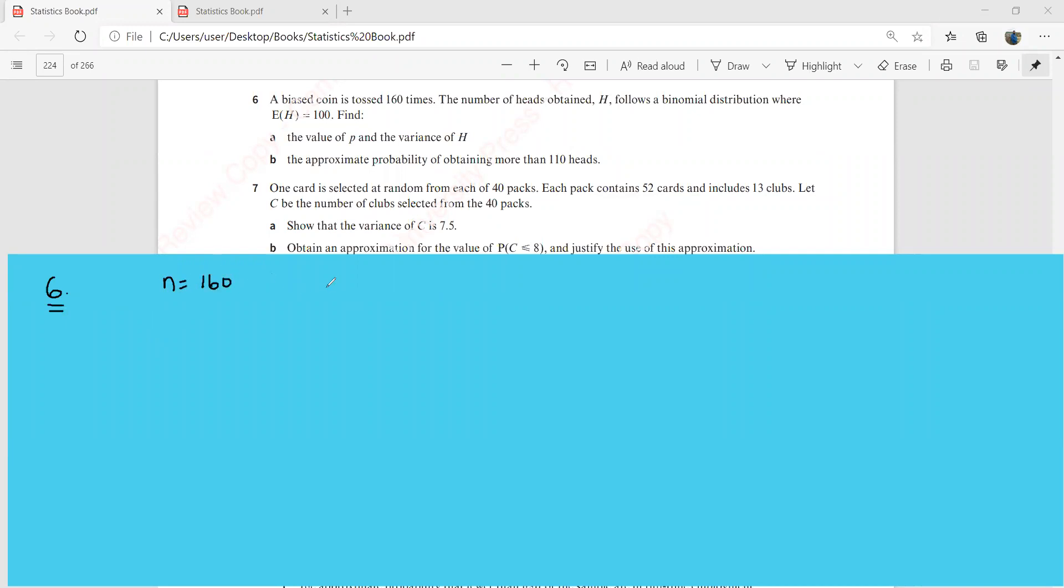The number of heads obtained h follows a binomial distribution where E of h is 100. So E of h equal to 100 means that your np is equal to 100. We know that n is 160. This is p. This is 100. So we can find this p from here. This is 100 over 160, and this is going to be 5 over 8.